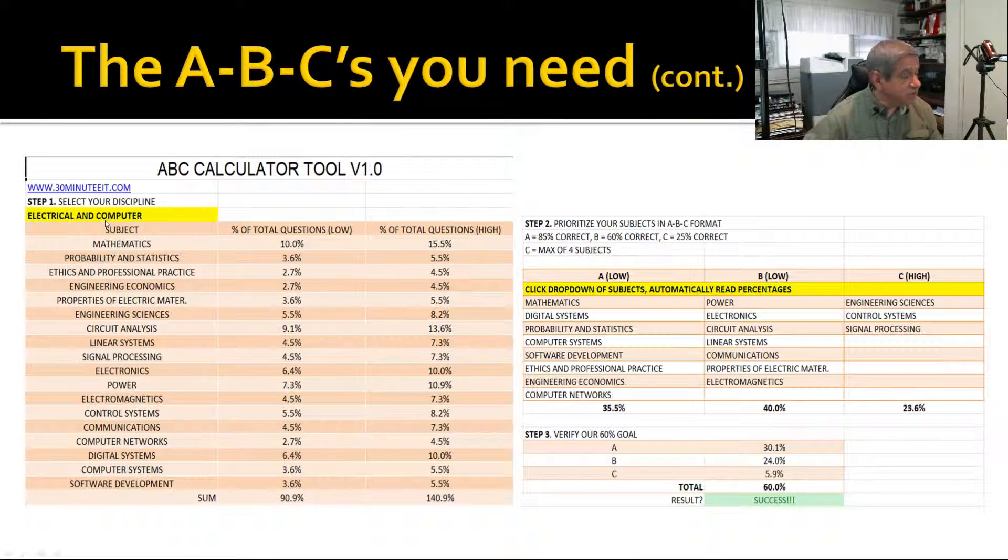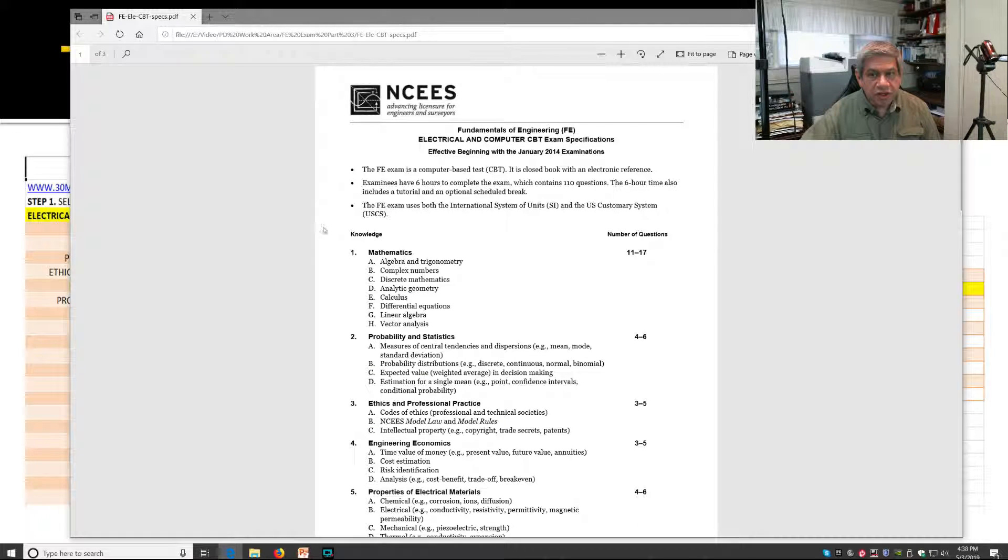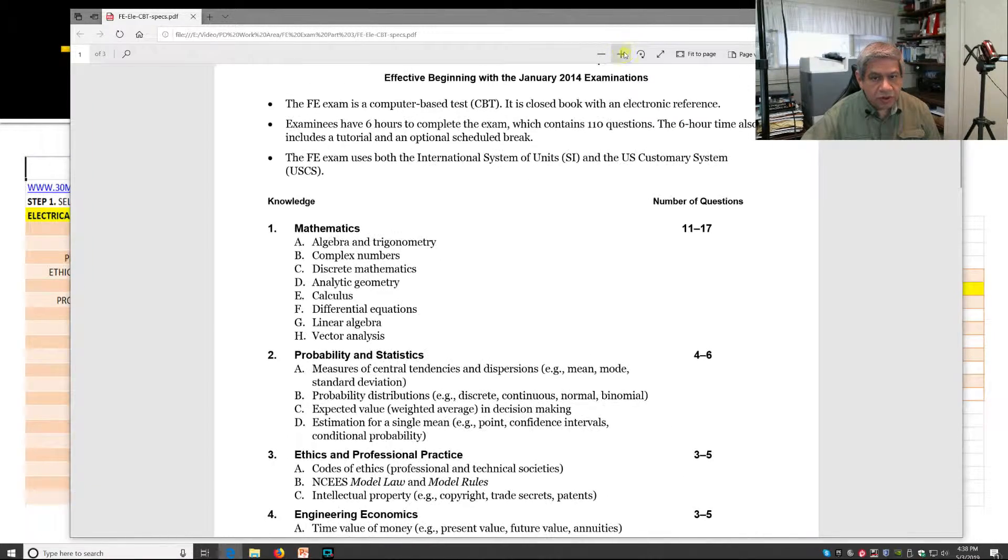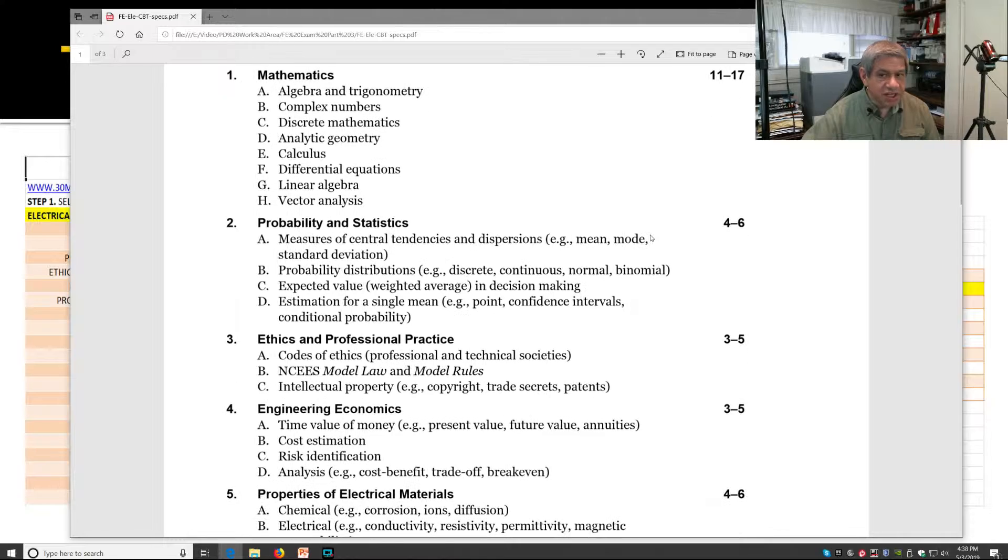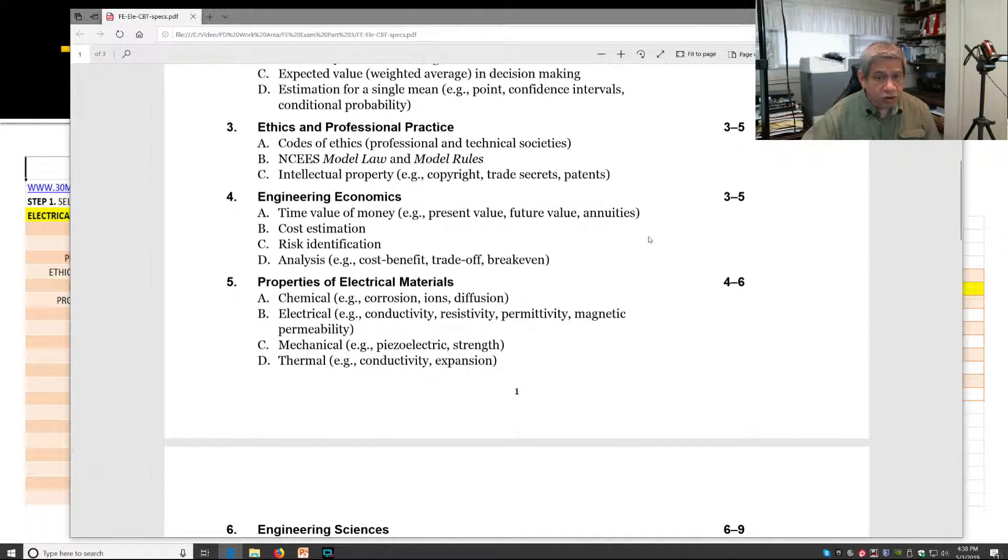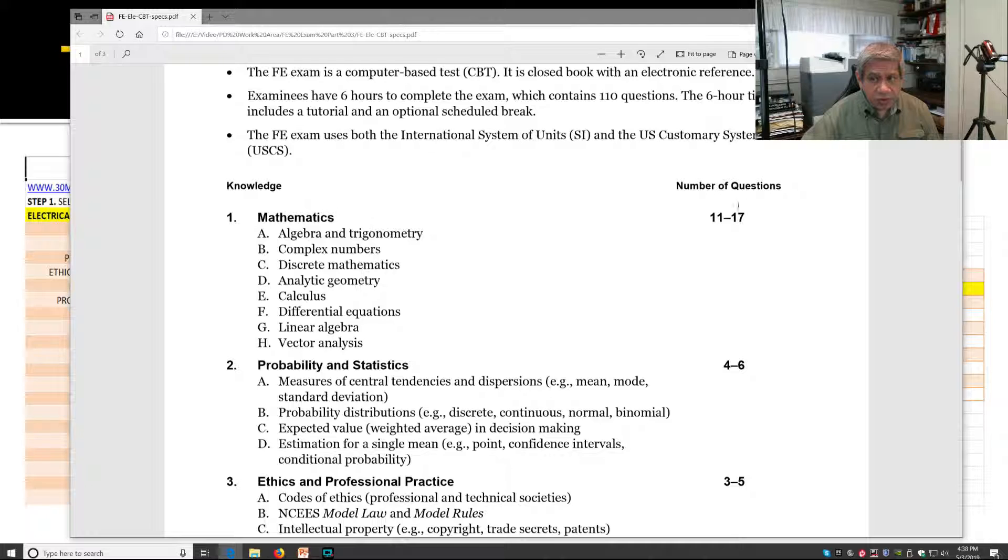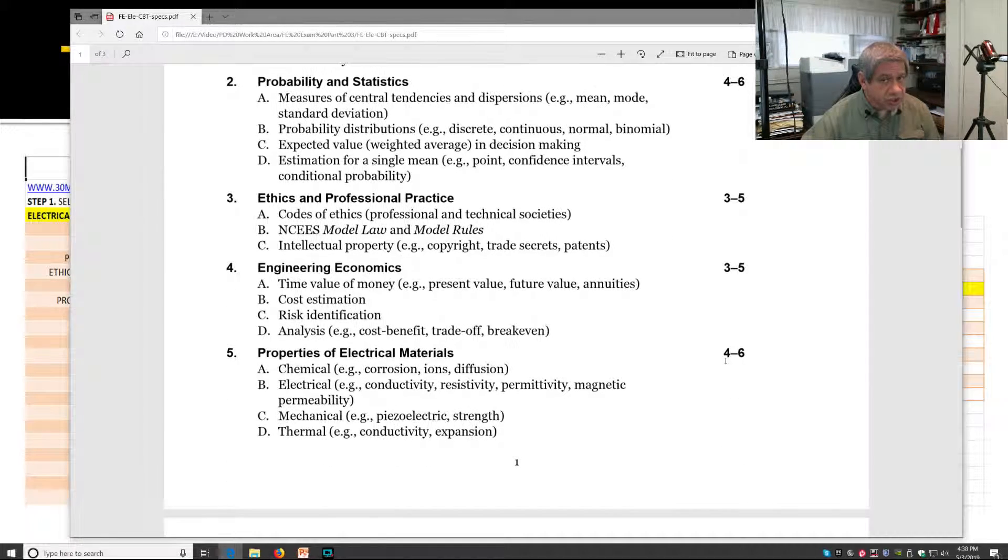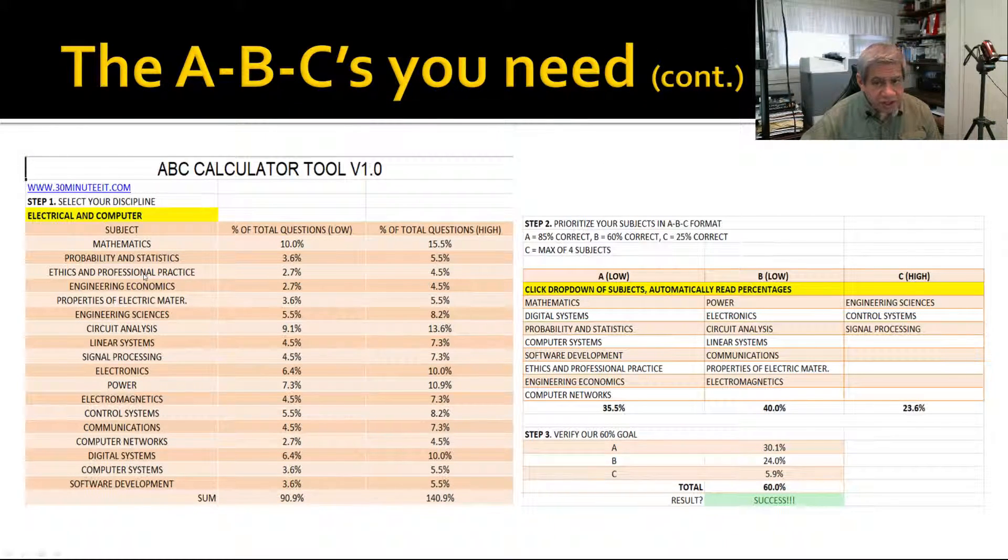You'll see all the subjects listed, and these are out of the specification sheet. Here is the Fundamentals of Engineering Electrical and Computer Exam Specification, so this has all the sections in it that you can expect to see on the FE exam. What Joel did was he took each of these numbered titles with the range of questions—it says number of questions minimum and maximum—and he put them into his tool. So that's where those numbers came from. Each one of these on the left-hand side here represents one of those top sections, and then over on the right, this is where you're going to have to make a judgment call.